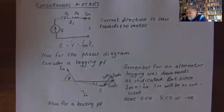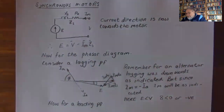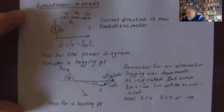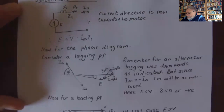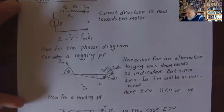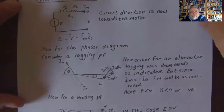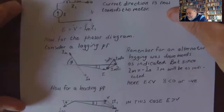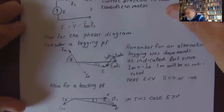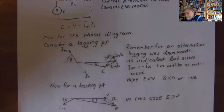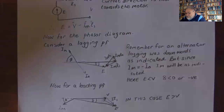Now let's look at the phase diagram. Let's consider a lagging power factor. Remember, for an alternator, lagging current was downwards as I_a. Now I_m is minus I_a, therefore it will be in the opposite direction.